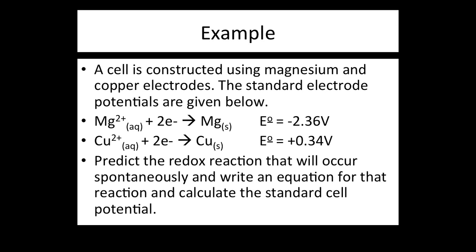Here is another example. A cell is constructed using magnesium and copper electrodes. The standard electrode potentials are given: Mg²⁺ + 2e⁻ → Mg(s) and Cu²⁺ + 2e⁻ → Cu(s) with their respective values. Predict the redox reaction that will occur spontaneously, write an equation for the reaction, and calculate the standard cell potential. Pause the video now, have a go at the question — the answer will be on the following slide.